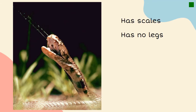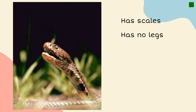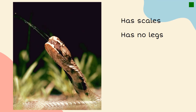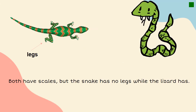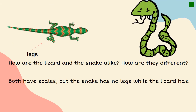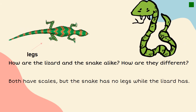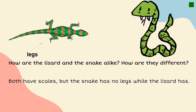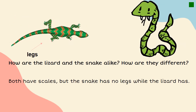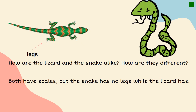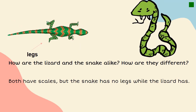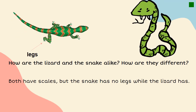Here we can see a snake — a snake has scales and has no legs. Here we can see a lizard and a snake. How are the lizard and the snake alike? They are both reptiles, and they both have scales. How are they different? The snake has no legs while the lizard has legs.